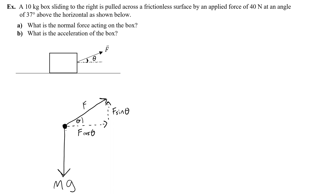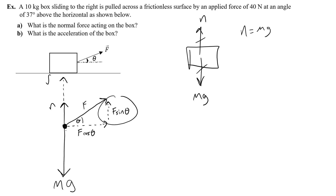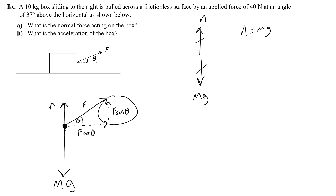There's also a normal force acting on the box. Normally we would say the weight equals the normal force, so n equals mg. But now I've got this pull upward from the applied force, which means you're actually lifting the box a little bit off the ground. Therefore there's going to be less normal force supporting the box. The upward F sine component combines with the smaller normal force to equal the weight.